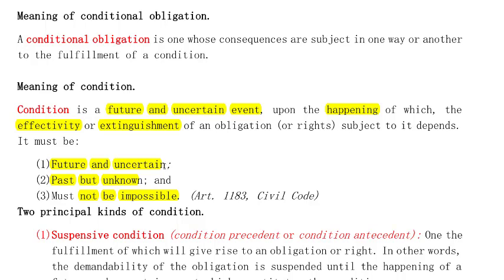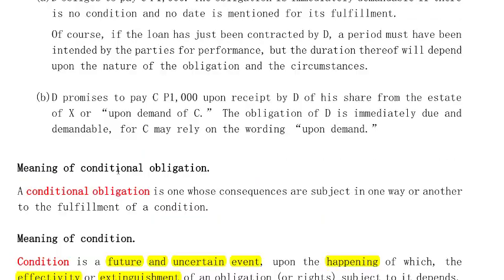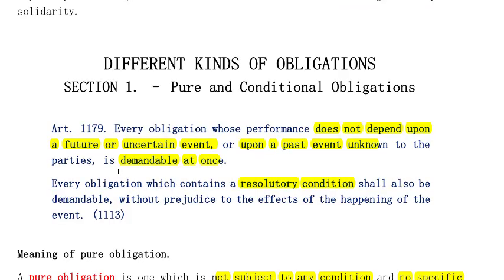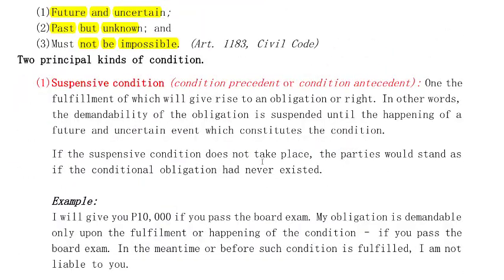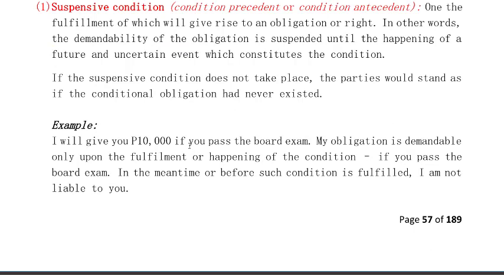The condition should refer to a past but unknown event to the parties, or it could refer to a future event whose occurrence must also be uncertain. Those are our requirements for a condition. To conclude under this provision, it also tells us the obligations that are demandable at once: those which are pure under the first paragraph, and under the second paragraph, those obligations that contain a resolutory condition or resolutory period. Take note of that. Now let's move on to the principal kinds of condition.